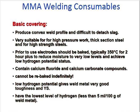The basic electrode covering is very important. It is used for pressure vessels and anywhere high strength is required in critical conditions. It produces a convex weld profile and the slag is very difficult to detach. Very suitable for high-pressure work, thick section steel, and high-strength steel. The electrode must be baked, typically at 350°C for two hours or more, to reduce moisture to a very low level and achieve low hydrogen potential status. Calcium fluoride and calcium carbonate compounds cannot be re-baked. It gives weld metal very good toughness and yield strength, with the lowest level of hydrogen, so cracking will not be induced.